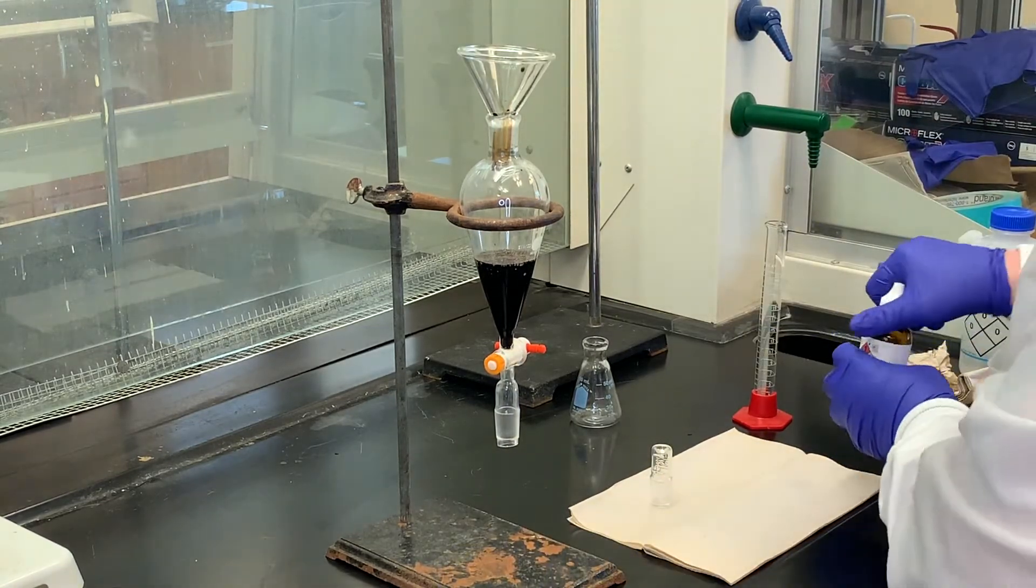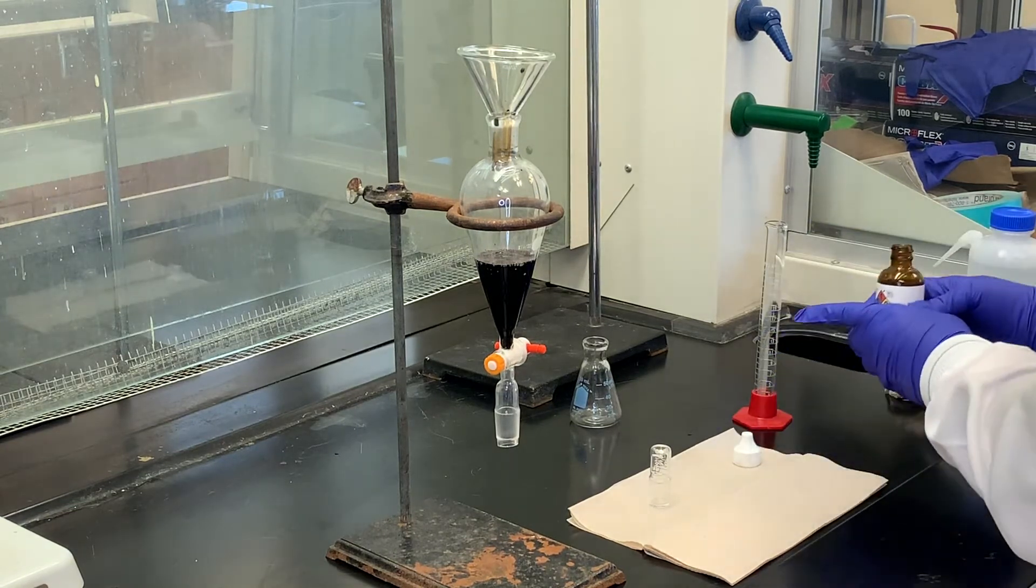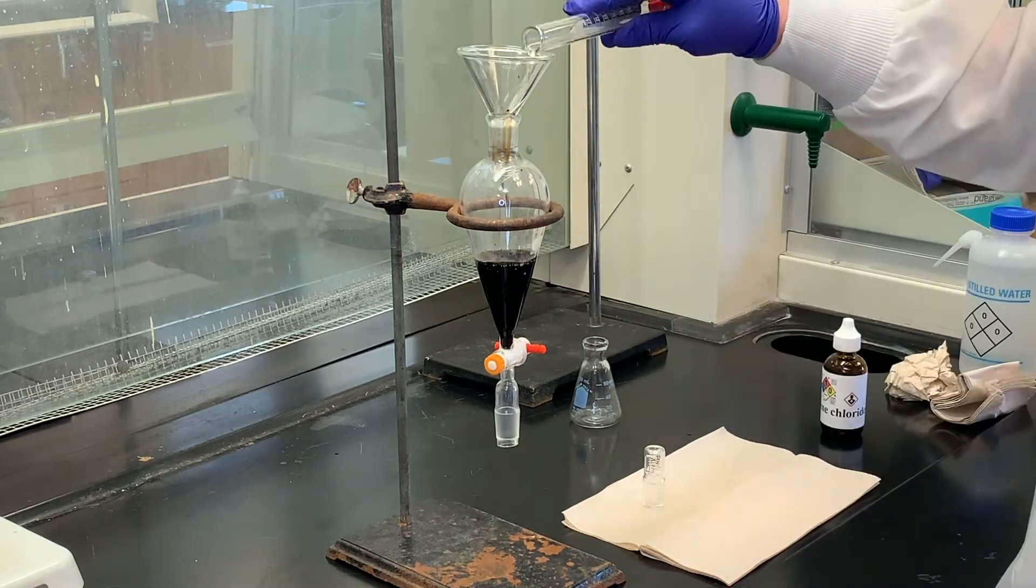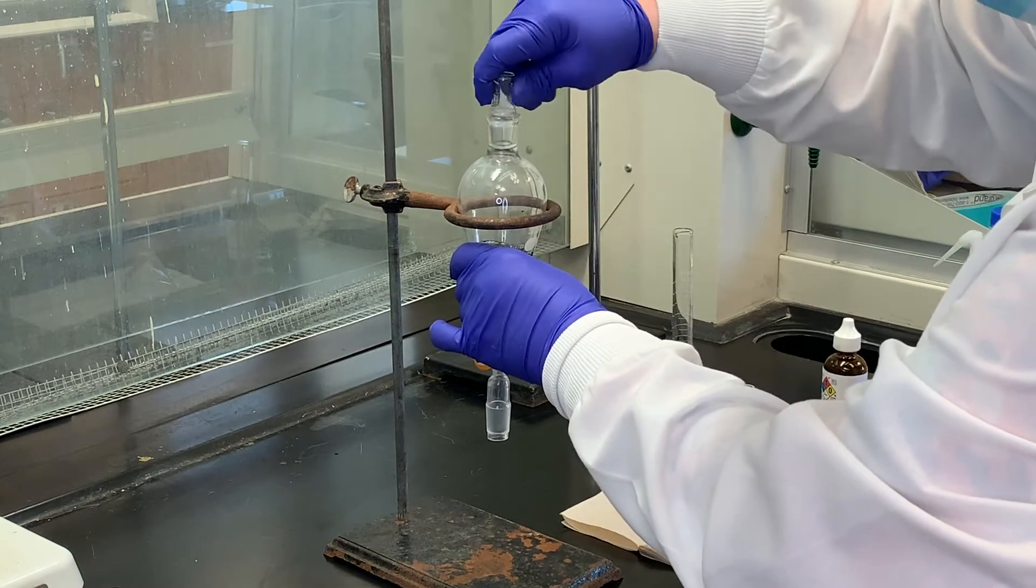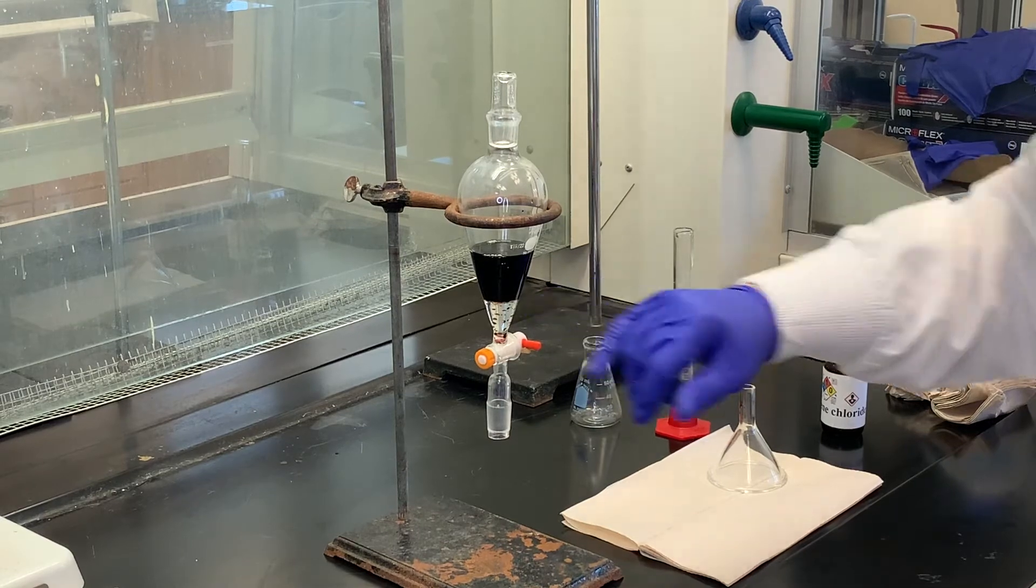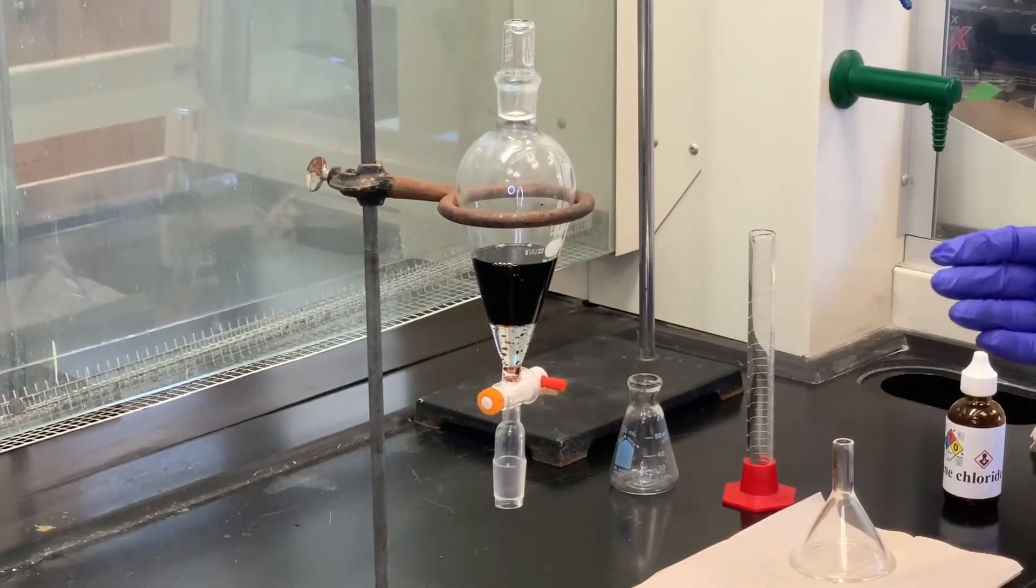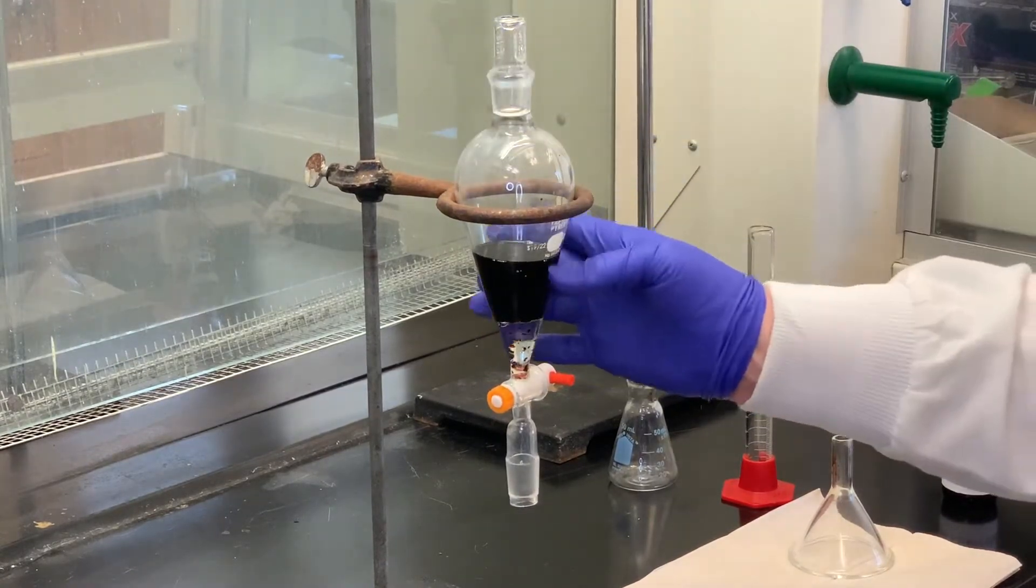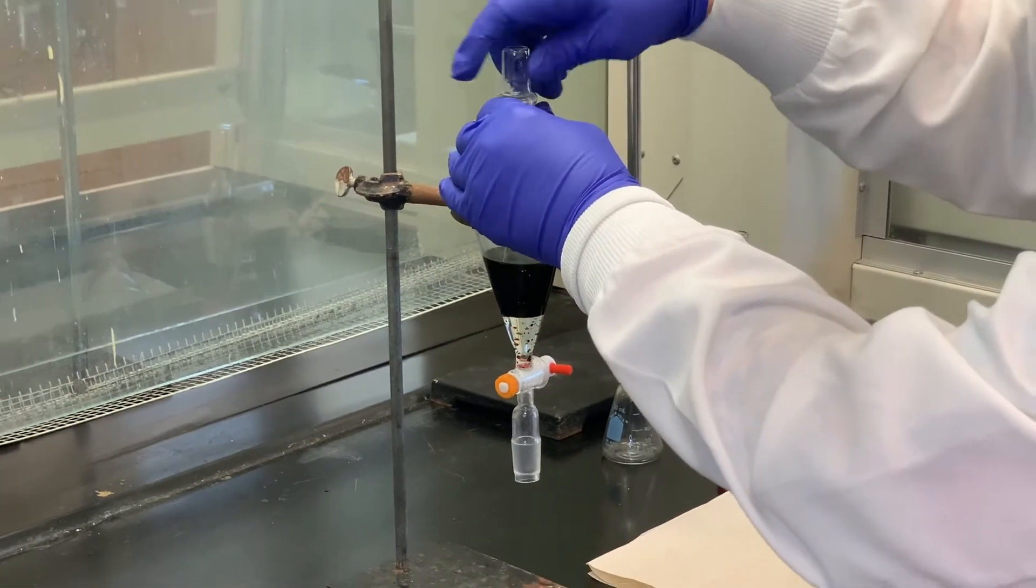And then to that, I'm going to add somewhere between five and 10 milliliters of the methylene chloride. Now, if you notice, we've already got two layers that have formed. This colorless solution at the bottom is the methylene chloride. But we need to mix this up because if we don't, we're never going to get all the caffeine to come out. I'm going to open this up and put it back in.